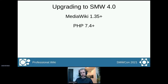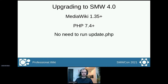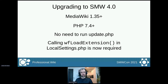To upgrade to Semantic MediaWiki 4, you will first need to have MediaWiki 1.35 or later, and you will need PHP 7.4. At least that is the PHP requirement at the moment — we might still reduce this to 7.3, especially if we get requests from people. For this particular release, there will actually be no need to run update.php. But you will need to call wfLoadExtension in your LocalSettings file, like you need to do with many other extensions already.